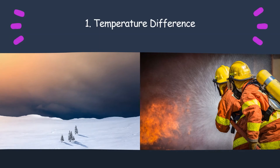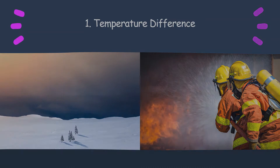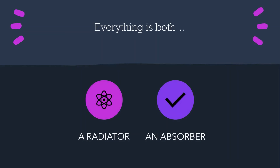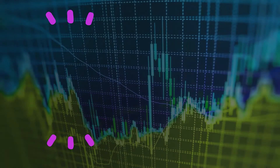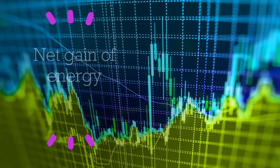First of all, it's the temperature difference between the object and the surrounding. Everything in the world is both an absorber and a radiator, which means that if an object absorbs radiation from the surroundings, it also emits radiation to the surroundings at the same time. In fact, there's a term that you have to remember, and that is the net gain of energy.